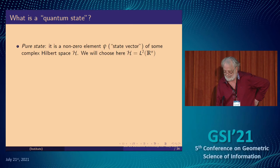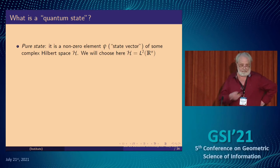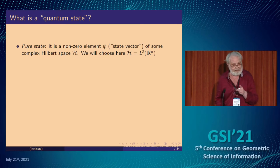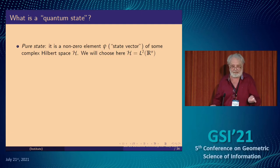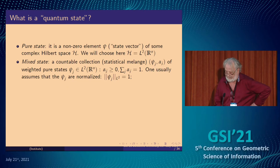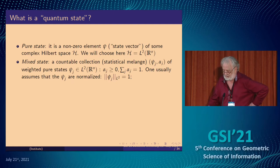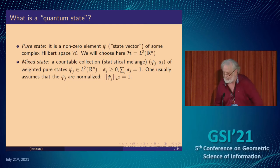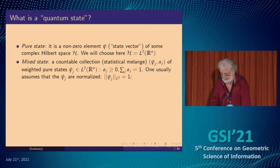So what is a quantum state? First, a pure state is a non-zero element — a state vector — of some complex Hilbert space. I will take in this talk always L² of Rⁿ, that is the square integrable functions on Rⁿ, as the Hilbert space. This allows us to consider infinite dimensional states. A mixed state is a statistical classical mixture of pure states — a statistical mixture consisting of pairs (ψ_j, α_j) of weighted pure states, where the weights α_j are larger than zero and sum to one, forming probabilities.